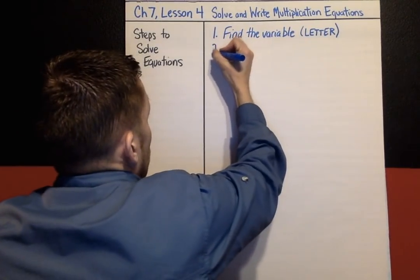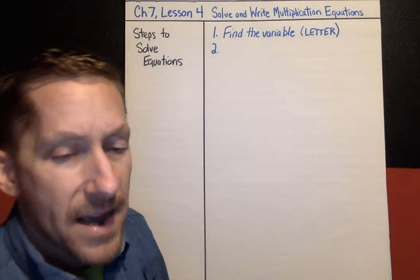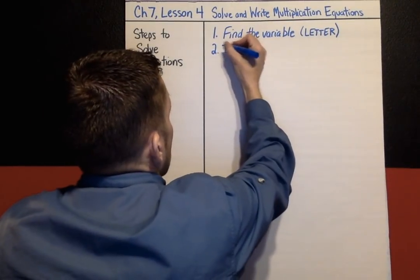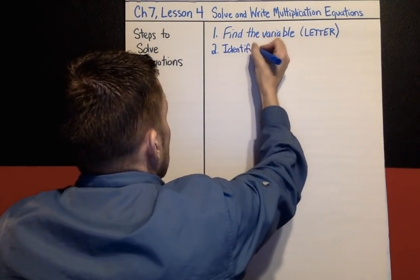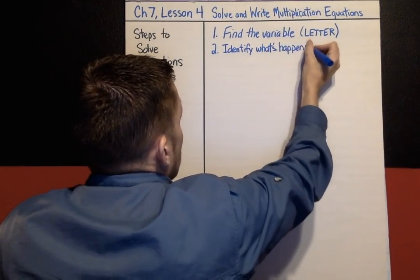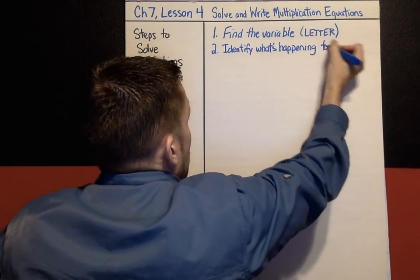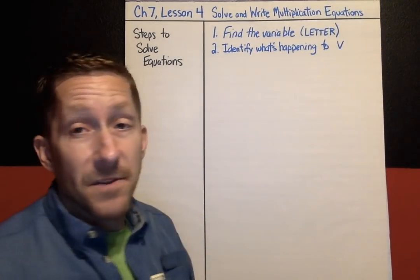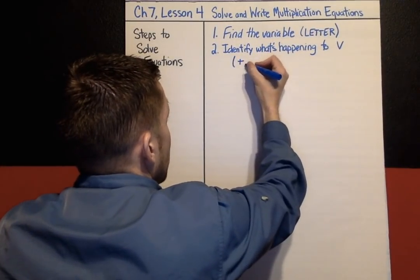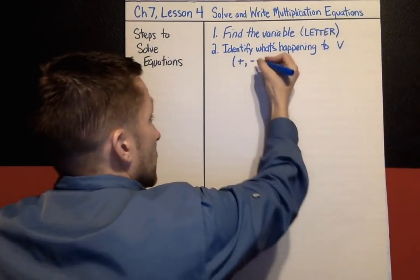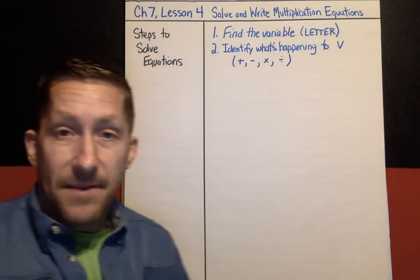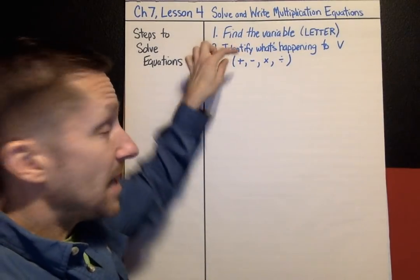Step 2: after you find the variable, you identify what's happening to the variable. One of these things is going to be happening: something might be added to the variable, something might be subtracted from the variable, the variable might be multiplied by a number, or the variable might be divided by a number. Find the variable, then identify what's happening to the variable.